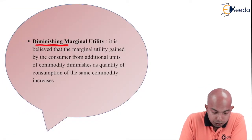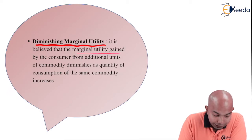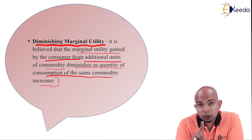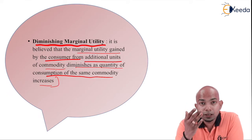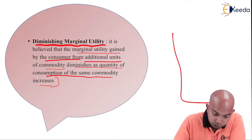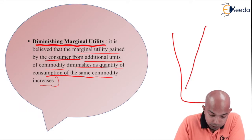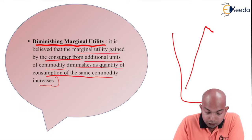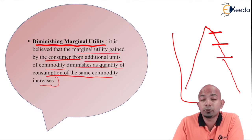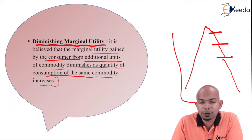The next assumption is diminishing marginal utility. It is believed that the marginal utility gained from additional units of a commodity diminishes as the quantity consumed increases. For example, if I have one glass of water when very thirsty, that will have higher satisfaction. The next glass, satisfaction will go a little lower, and the next glass lower again — it keeps going down. On a graph, satisfaction rises with the first glass then continuously comes down. This is known as the law of diminishing marginal utility, which has certain exceptions we will study later.